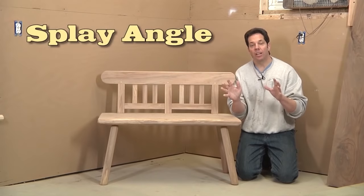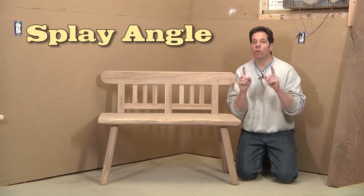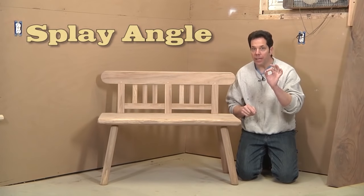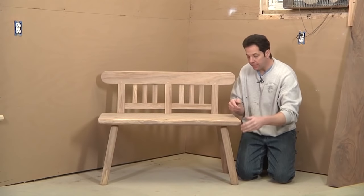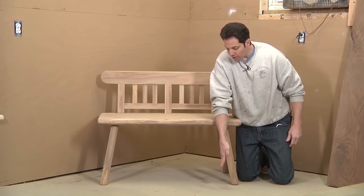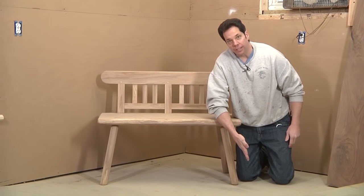One. Now, the first angle we're going to talk about is splay. And splay is when you're looking at the chair or bench from the front. It has to do with how much of an angle the legs are kicked out.